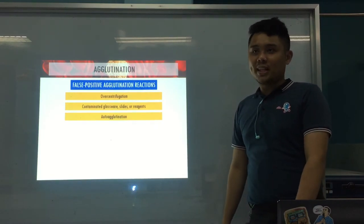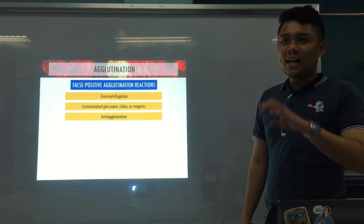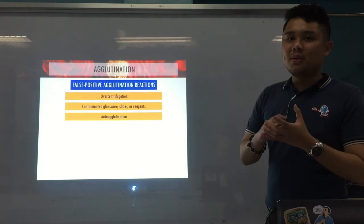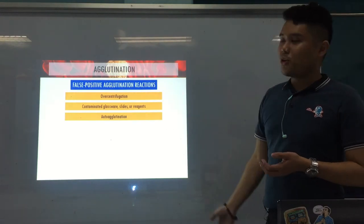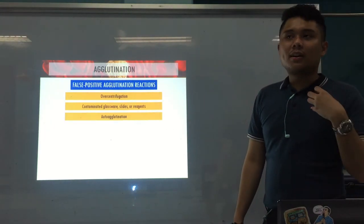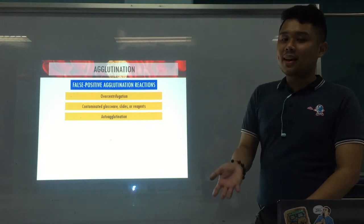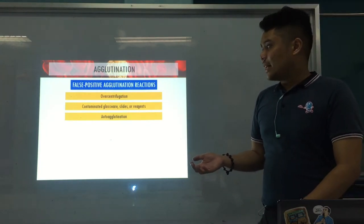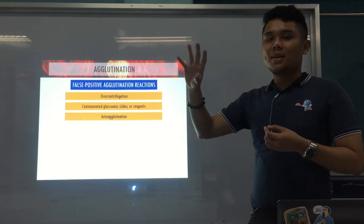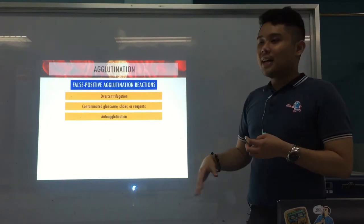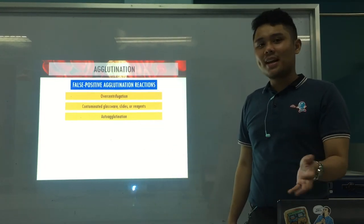Auto-agglutination: when auto-antibodies are present within the sample, they can cause the cells to agglutinate on their own. This can lead to false positive results — you may misinterpret the result as positive even though the antibody you are looking for is not present. This can lead to misdiagnosis.